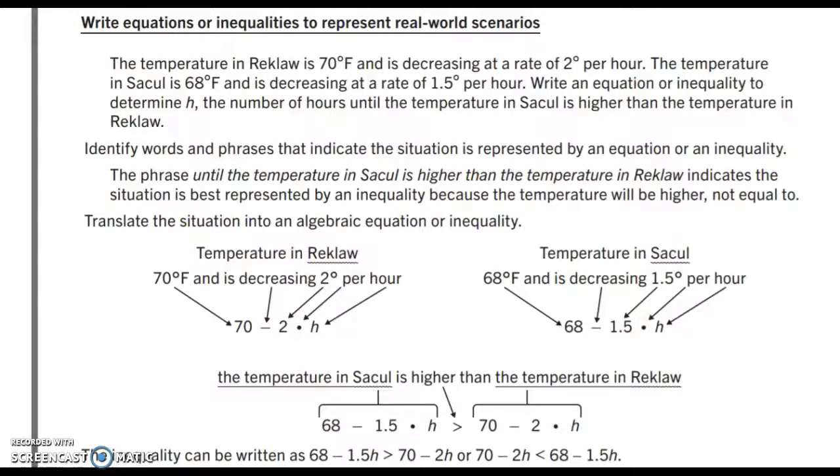If you notice here in the original description, we know that this is probably going to be an inequality because we want to determine when Sacul is higher than the temperature in Reclaw. We would only use an equal sign for an equation if the question were to say tell us the time when they will be the same at that same given rate of decrease. So, we know that this will be an inequality based on that one phrase.